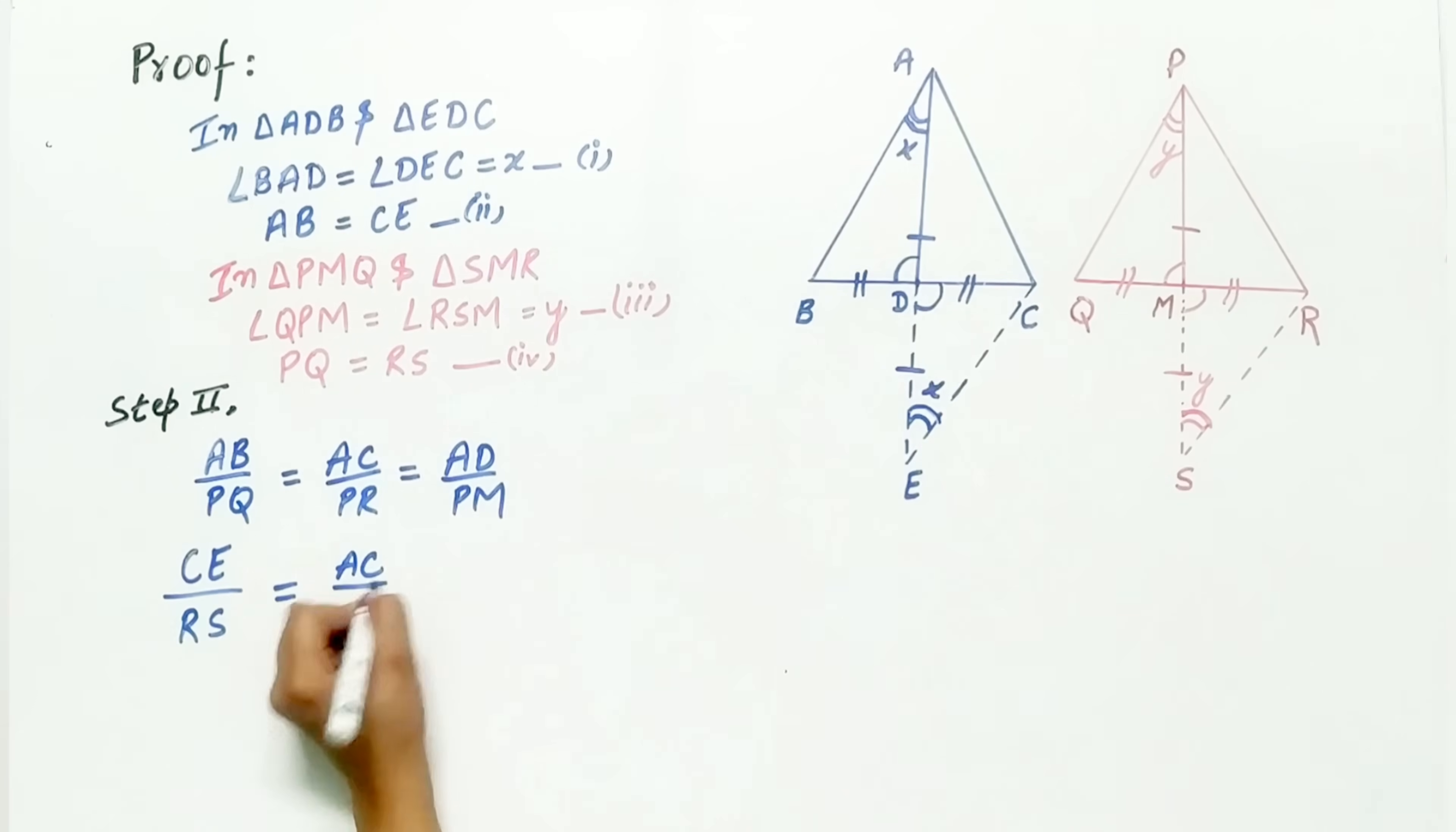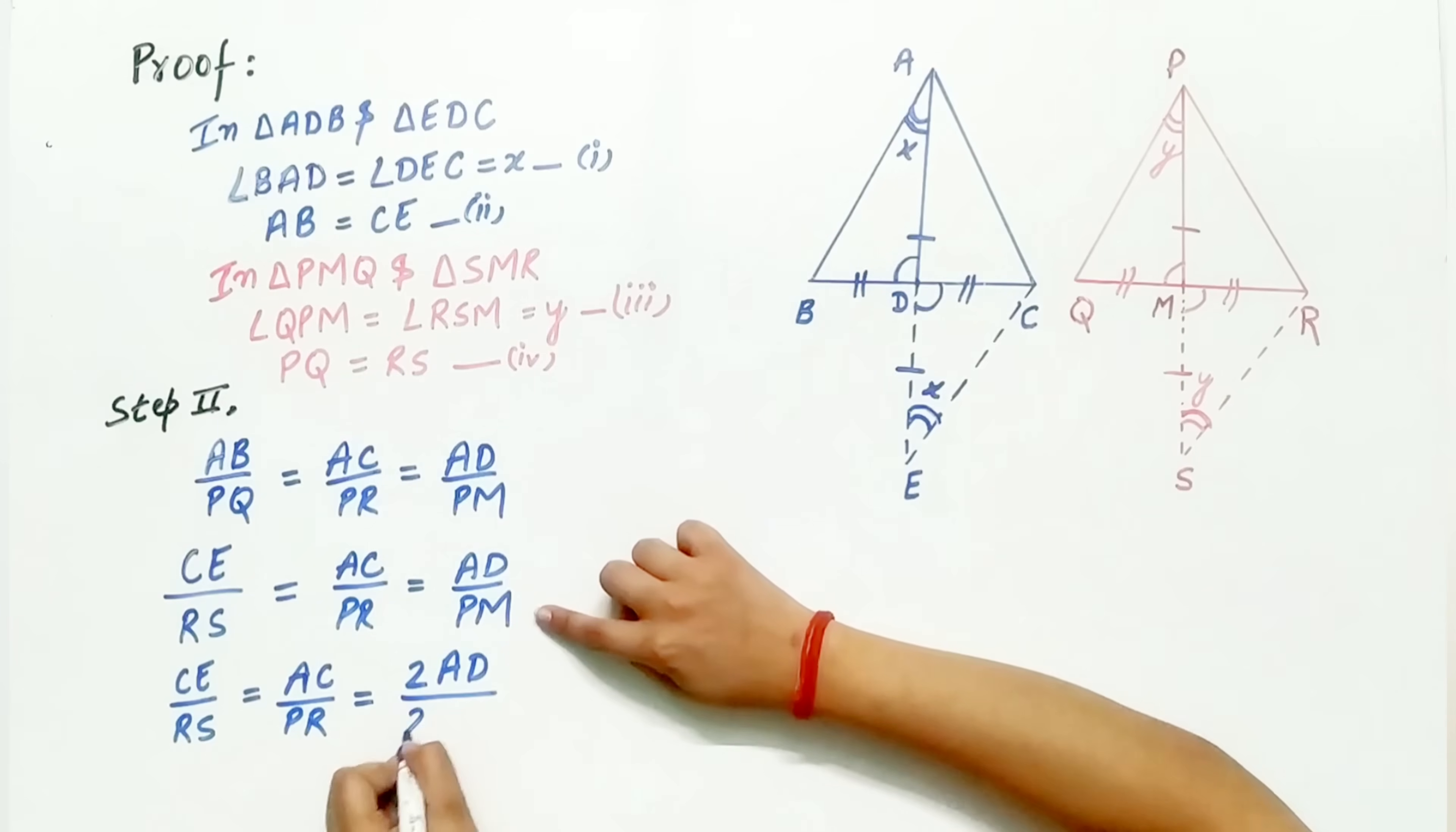CE by RS is equal to AC by PR is equal to AD by PM. Now, look carefully. Multiply both the terms by 2.